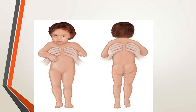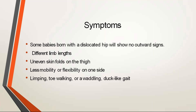Looking at symptoms: the picture depicts a baby with limb length discrepancy — the right lower limb is slightly shorter than the left. There is asymmetrical gluteal fold and excessive skin folds over the right thigh. When the baby is still a neonate, signs include different limb lengths, uneven skin folds, and less mobility or flexibility on the affected side. When the baby is walking, they tend to walk with a limp, toe-walk, or have a waddling gait — sometimes described as a duck-like walk. The type of gait depends on the severity of the DDH.